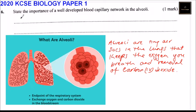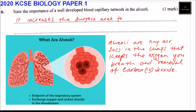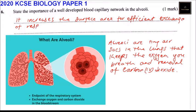So you should answer this question as follows: it increases the surface area — because of the well-developed blood capillary network, it increases the surface area for efficient exchange of respiratory gases, i.e., oxygen that you take in.